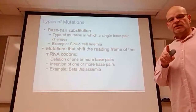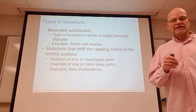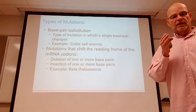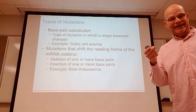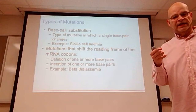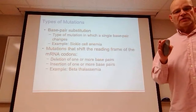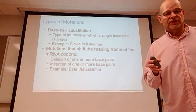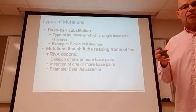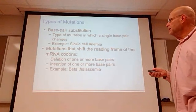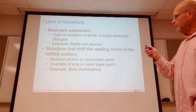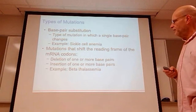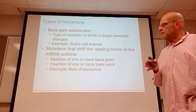Most of the time a single base change may not affect the protein, because we have multiple codons that can code for the same amino acid — if UAA and UAC both code for the same protein and the transcript changes from UAA to UAC, nothing changes. But if the substitution does produce a different amino acid, it can cause something like sickle cell anemia.